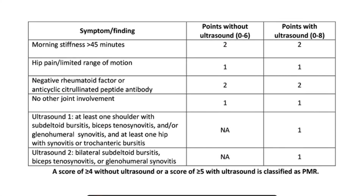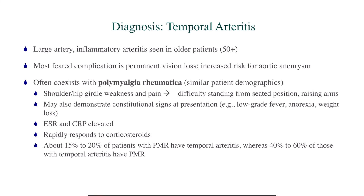Now, polymyalgia rheumatica. Temporal arteritis often coexists with PMR, since the patient demographics are similar: about 15 to 20 percent of patients with PMR have temporal arteritis, and about 40 to 60 percent of patients with temporal arteritis also have PMR — which was the case for this patient. PMR classically presents as difficulty raising the arms or getting up from a seated position, affecting the shoulders and hip girdles, causing weakness and pain.